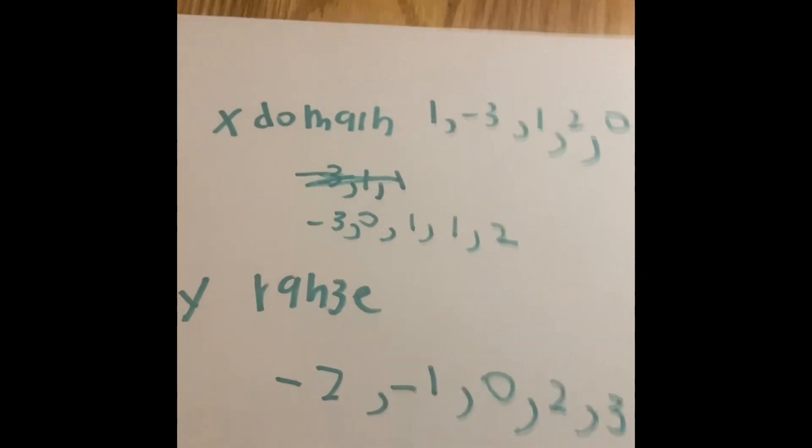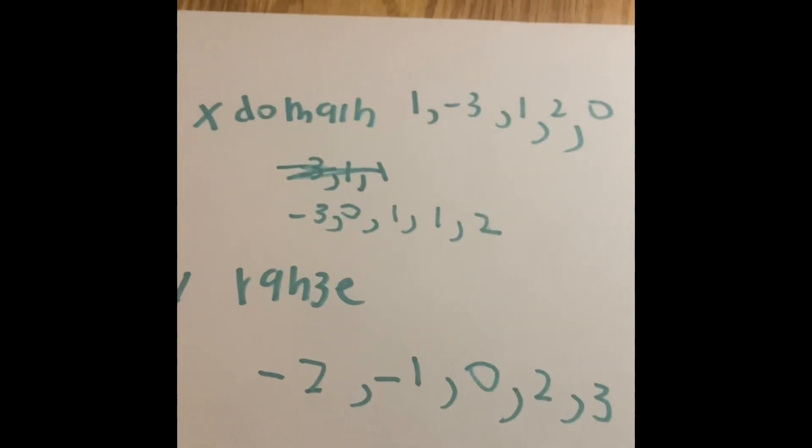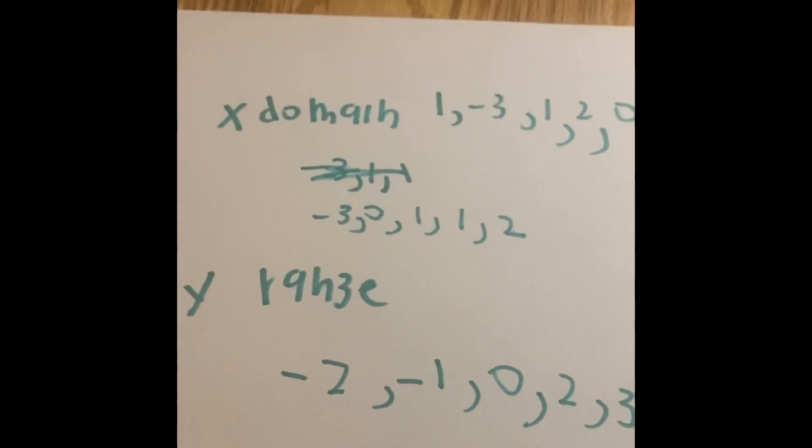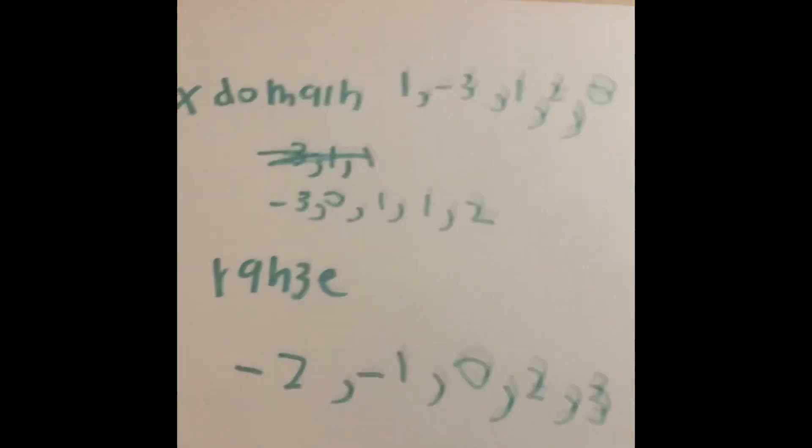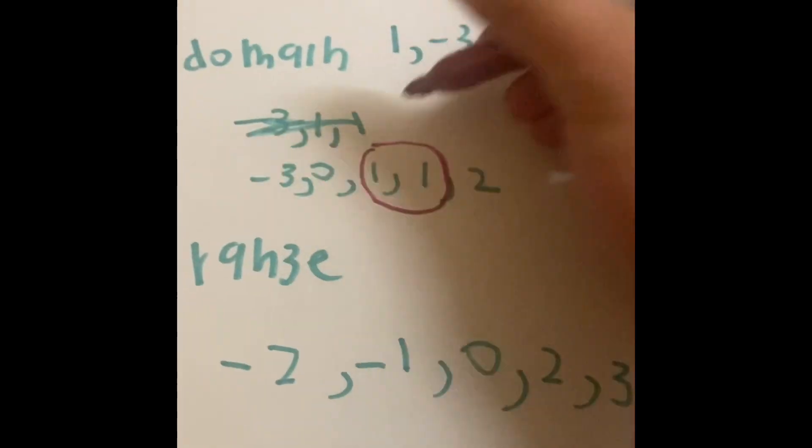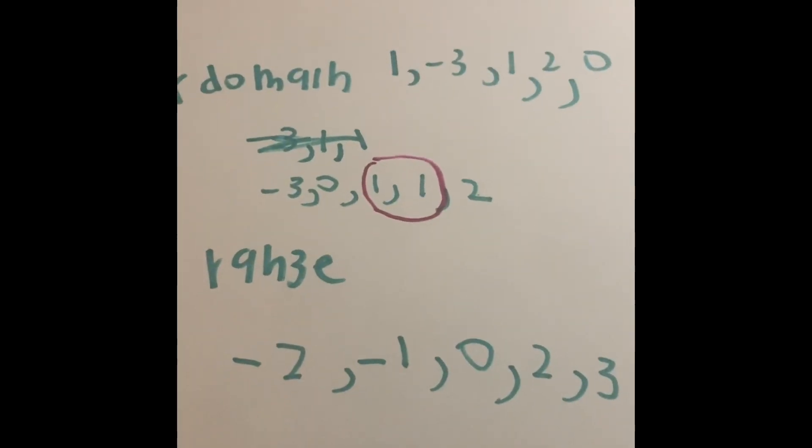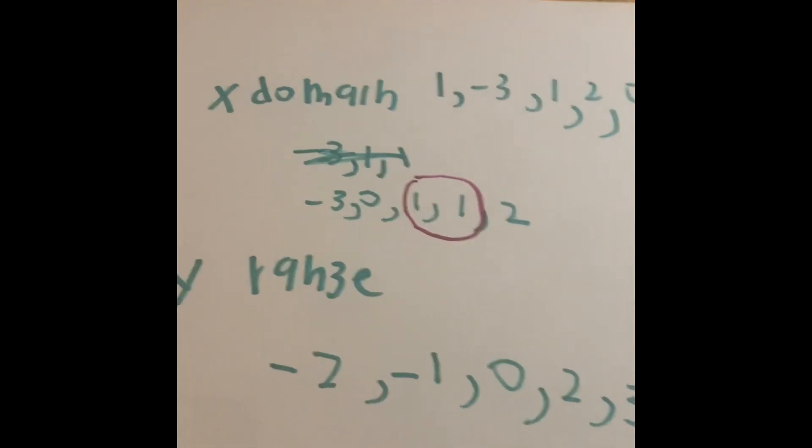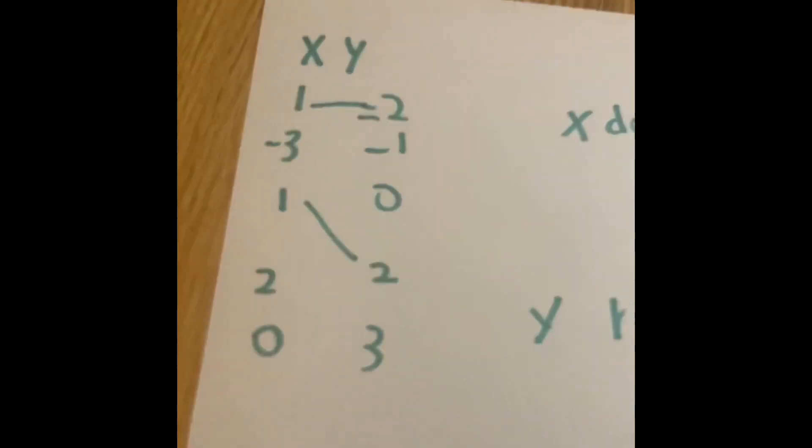But the reason why it's encouraged to rewrite them is because if you notice, there are 2 1s in the domains, which is very, very bad because you can't have 1 number go into 2 y values.